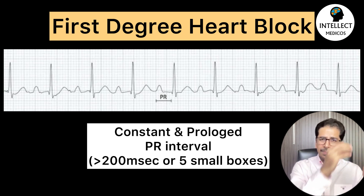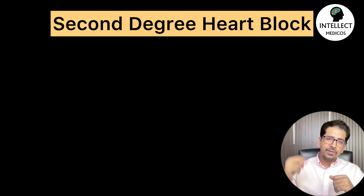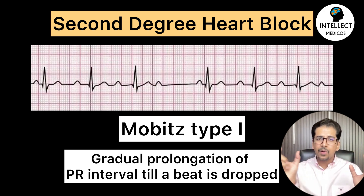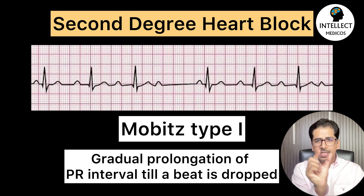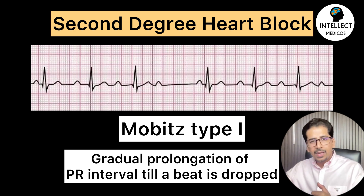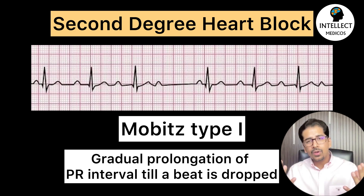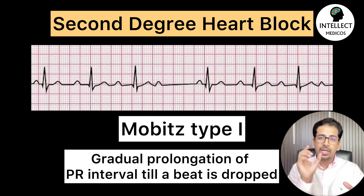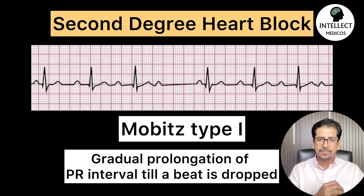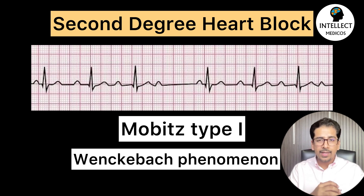For second-degree heart block, there are two types: Mobitz type 1 and Mobitz type 2. In Mobitz type 1, there is gradual prolongation of the PR interval — initially small, then it keeps increasing until ultimately there is a dropped beat, meaning no QRS complex — the impulse is not conducted. This is also called the Wenckebach phenomenon.